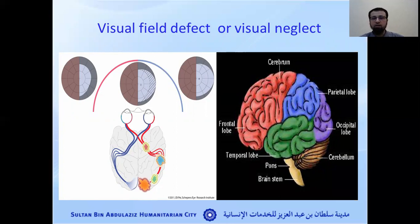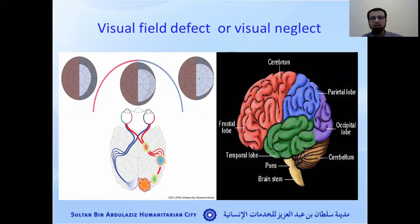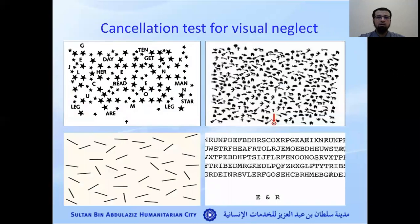Patients with visual field defect do not have the ability to see objects on the affected side. For visual neglect, they have the ability to see, but they cannot concentrate or look toward that side. The brain area involved in visual neglect is usually not the visual tract — it involves areas responsible for cognitive abilities, such as the frontal lobe and parietal lobe, and this will affect the patient's cognitive abilities and their ability to recover.